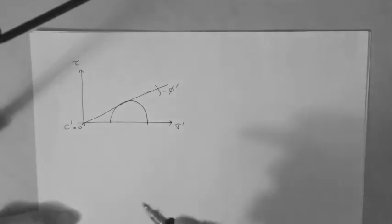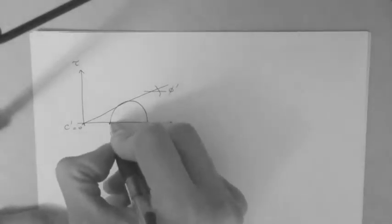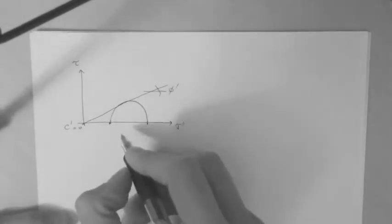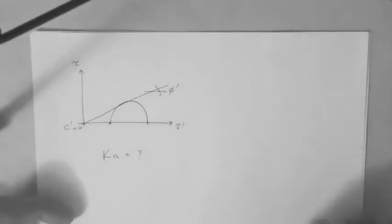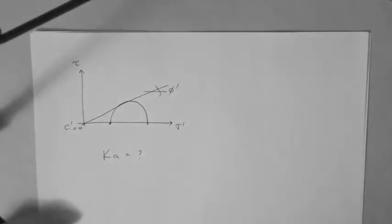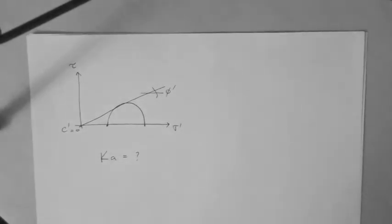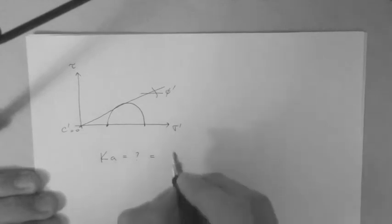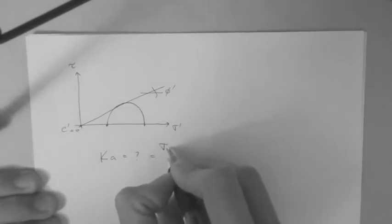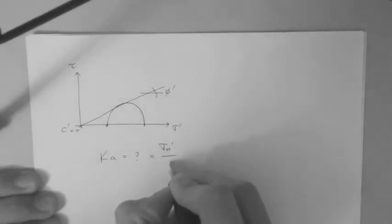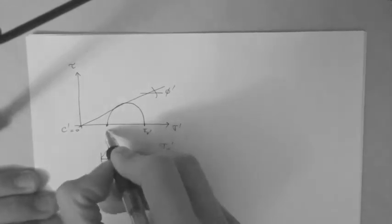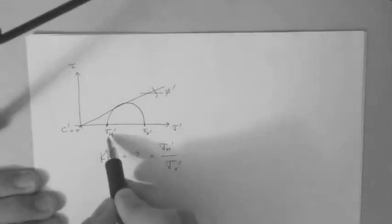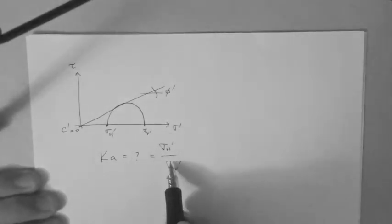So we have left here, and we were looking for the active lateral earth pressure, or also called active lateral stress ratio. So this is basically the horizontal stress over the vertical stress - that one divided by that one.